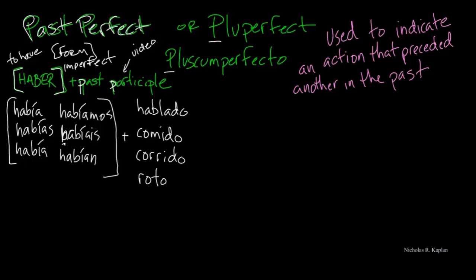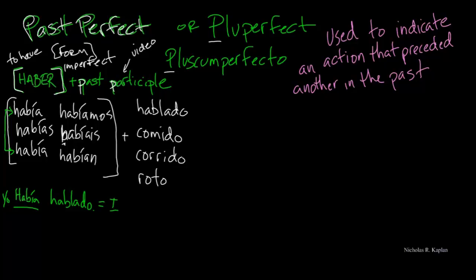Let's go ahead and put a few of these together and see what it looks like. So we could say 'había hablado.' If you'll notice, había is the same form for both yo and él/usted, so we might want to put in our subject pronoun to clarify. We would translate this as 'I had spoken.' This is the auxiliary verb haber, and then this is our participle.